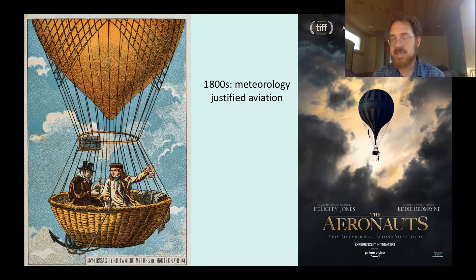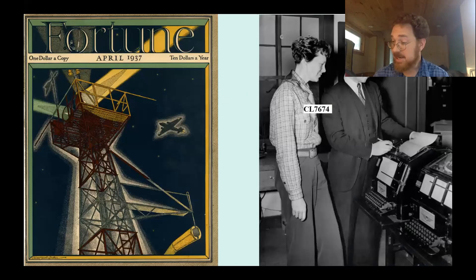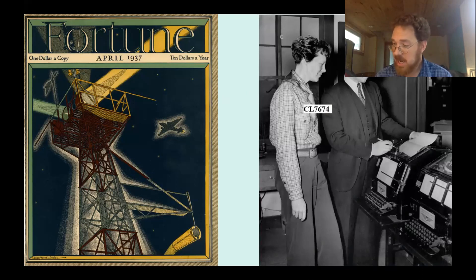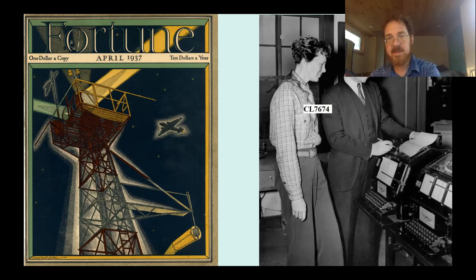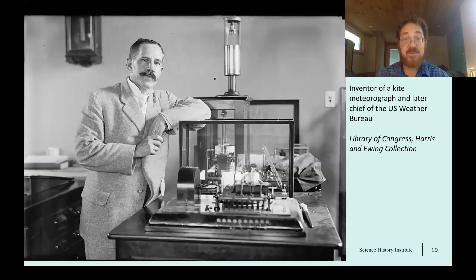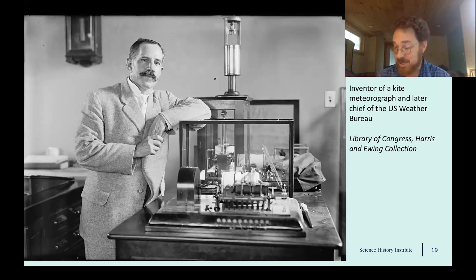During the 19th century, some scientists used meteorology to justify aviation. But that changed rapidly during the 20th century. Aviation became an important weapon during World War I, then started to become commercially significant during the 1920s and especially during the 1930s. Aviation in turn justified new efforts to measure the weather in order to predict it better and make the skies safer for flying. In 1898, five years before the Wright Brothers, future Weather Bureau Chief Charles F. Marvin invented a new instrument called the Kite Meteorograph.